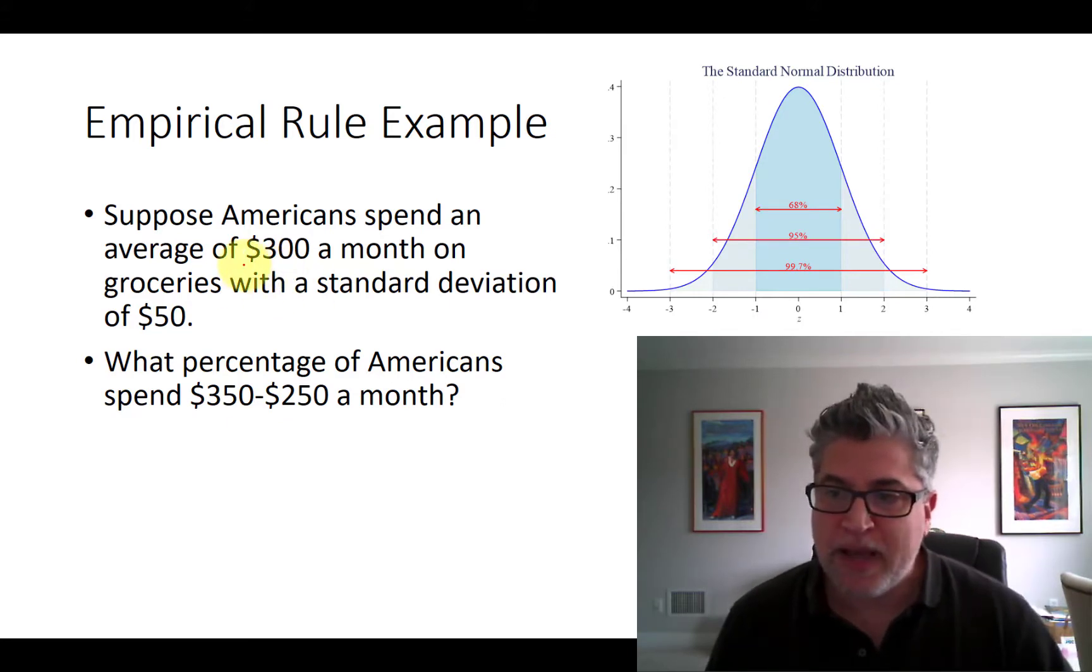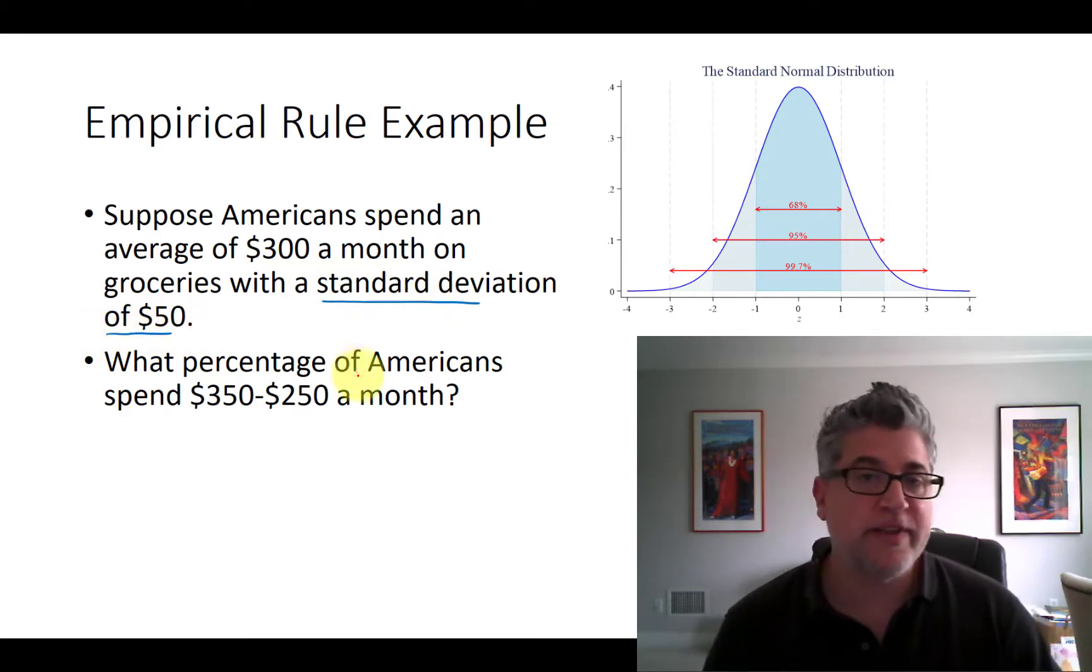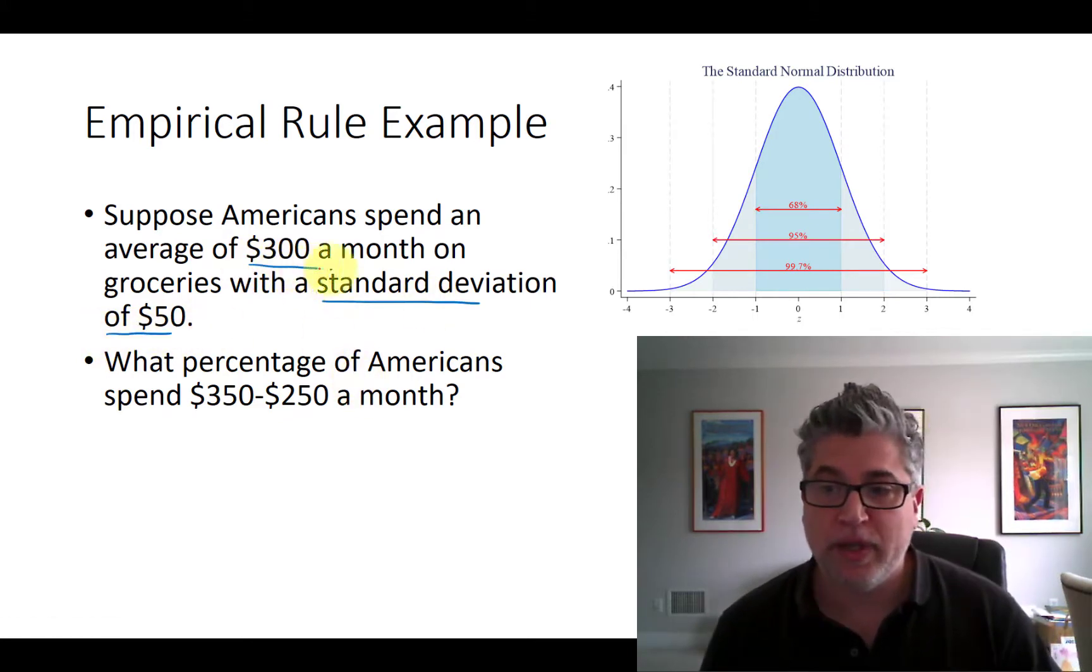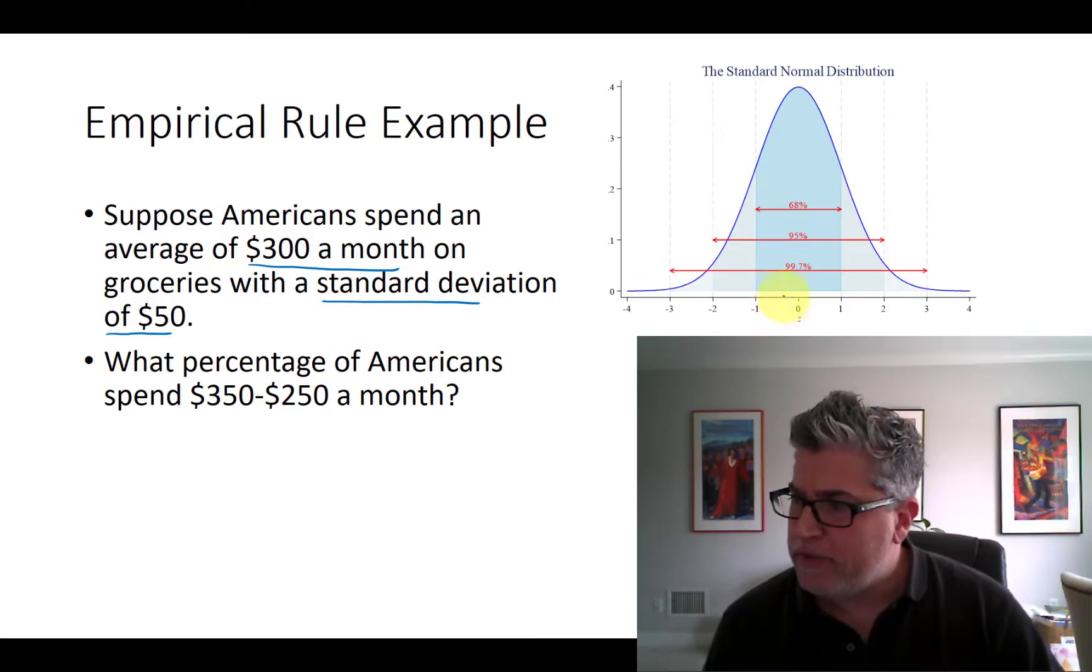But when you combine that with this statement right here, a standard deviation of $50, well now we can get somewhere. So if our mean here, our average value, is $300 a month.